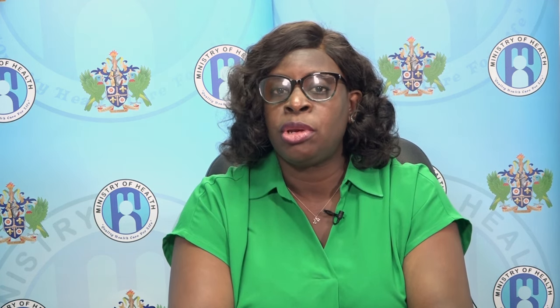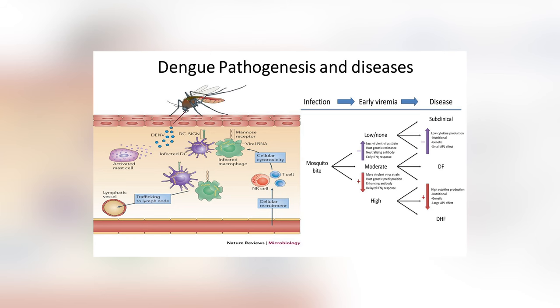Dengue fever has an incubation period of three to four days. Symptoms typically develop between four and seven days after the bite of an infected mosquito. There are three categories of symptomatic infection. Number one is dengue fever, also known as break bone fever, which is defined by the presence of fever and two or more of the following.